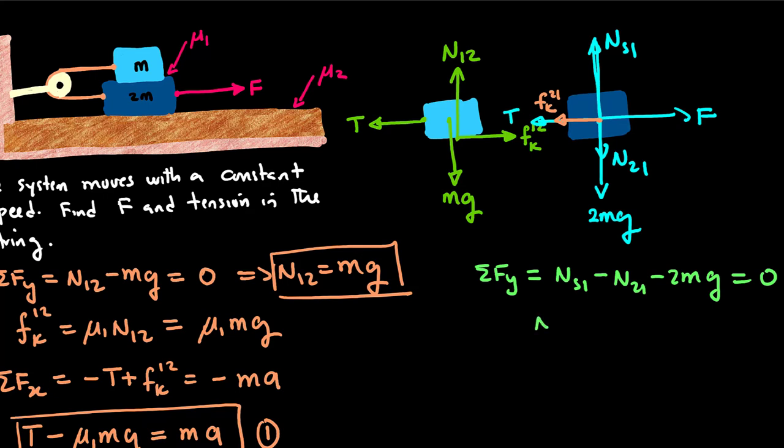This would mean that Ns1 is equal to... Remember that N12 is equal to N21 by Newton's third law. So this will be equal to 3mg.